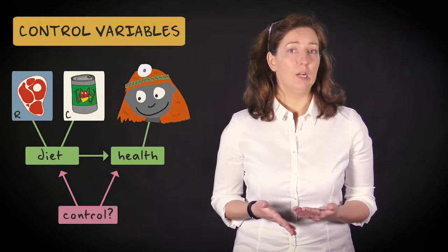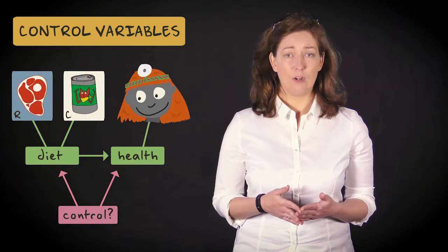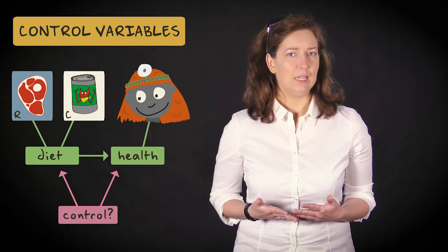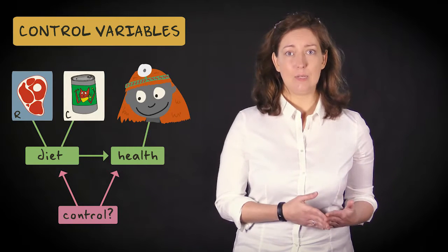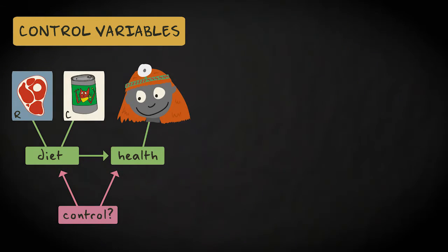Well, a control variable can only affect the relation between the primary variables of interest when it is related to both the independent and the dependent variable. A possible confounder here is the owner's concern for their pet's health.